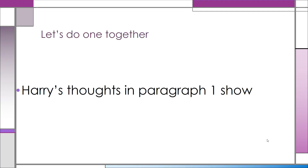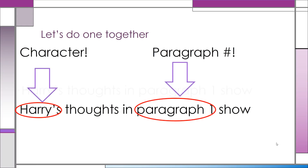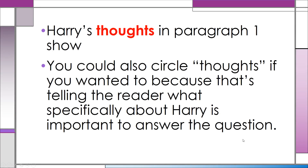So let's do one together: Harry's thoughts in paragraph one show. Harry is a character and there's a paragraph number, so these are the key words in this question stem. You could also circle thoughts if you wanted to, because that's telling the reader what specifically about Harry is important to answer the question. However, once you circle all the words in a question stem, then we're not really finding the key words. The key words are the most, most important ones.